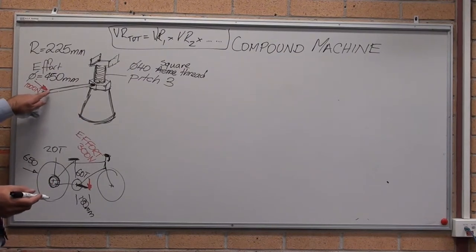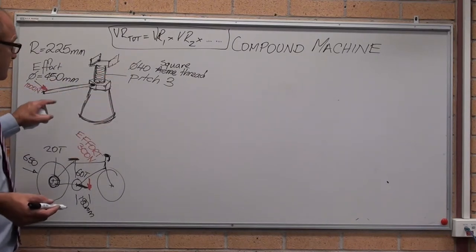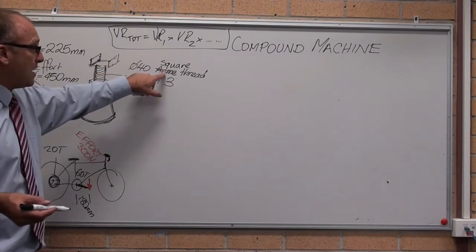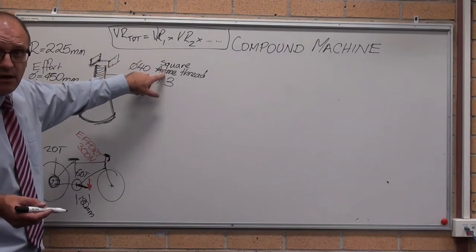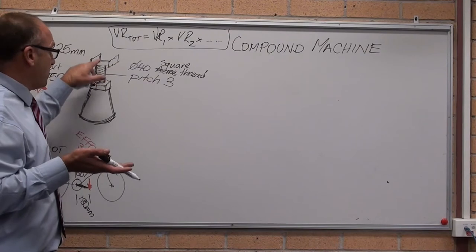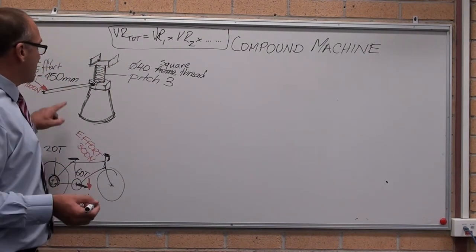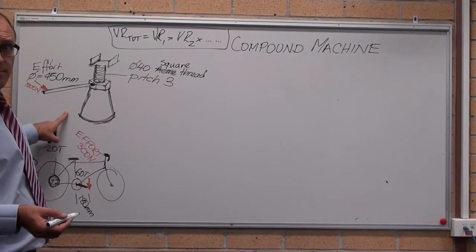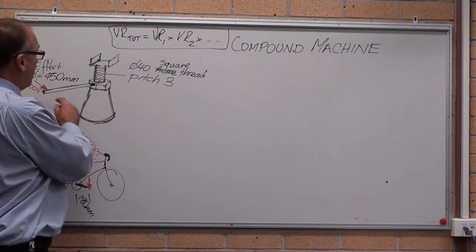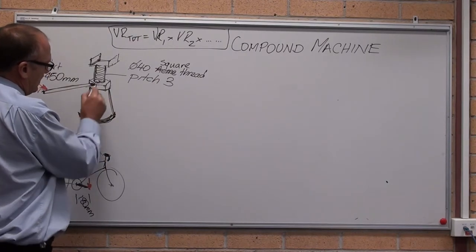I've got a lever connected to a screw. For every one full turn of that diameter 40 screw, an Acme thread is a square thread. I've just changed it to say square. For every one full turn, this lifts up 3 millimeters. So we're just looking at compound machines. This first one looks like a compound machine, but it's actually just a simple machine. For every one full turn, this thing here is basically a base with a nut on top.